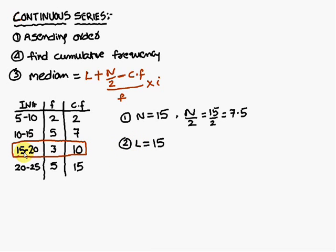Therefore for this one L is equal to 15, the lower interval. And cumulative frequency is 7. Here cumulative frequency is the preceding cumulative frequency you have to write. Preceding cumulative frequency is 7. Therefore write 7, don't write 10.